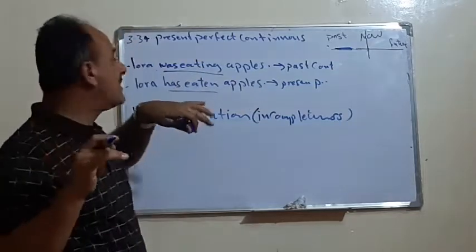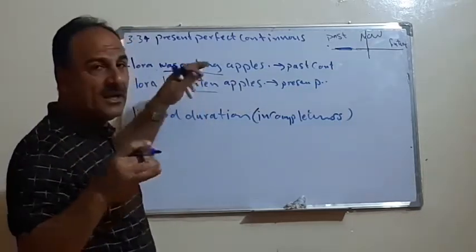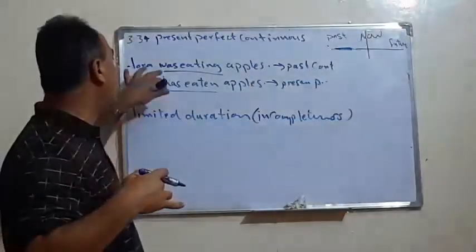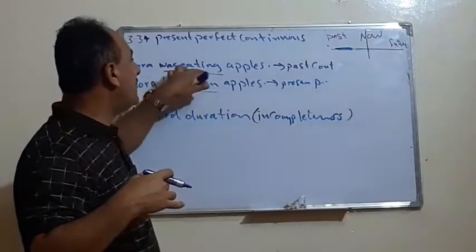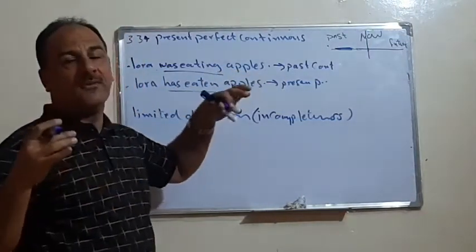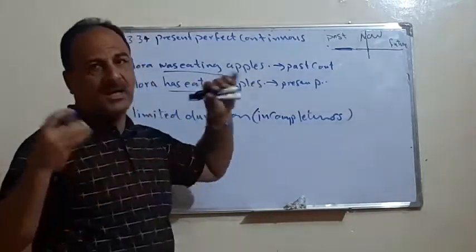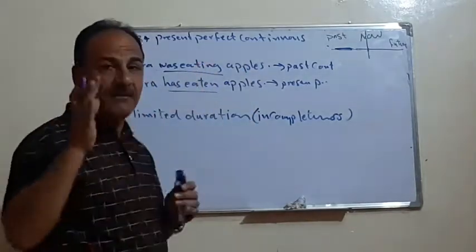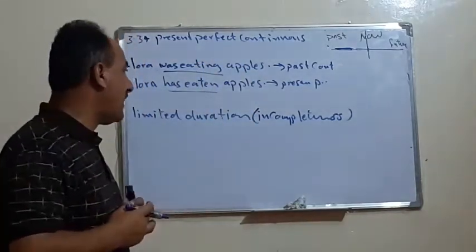Why incompleteness? Because it is, or it could be interrupted by another action. We can say, Laura was eating apples when her friend or her friends, say, called her. So, it can be interrupted by another action.